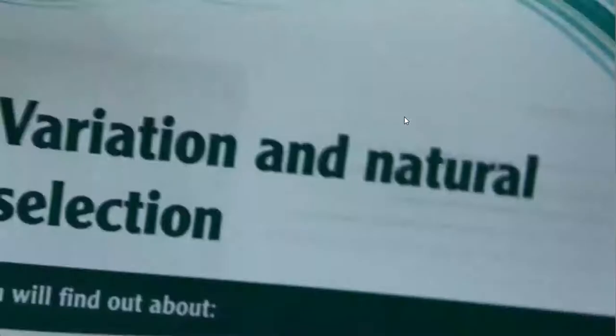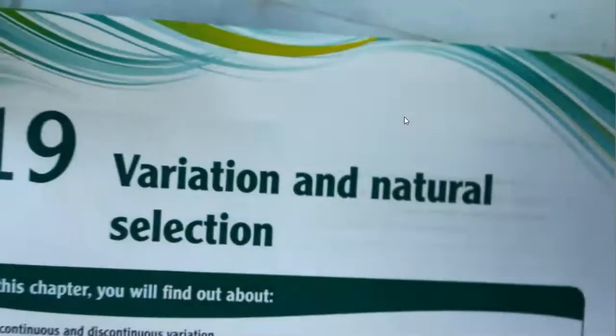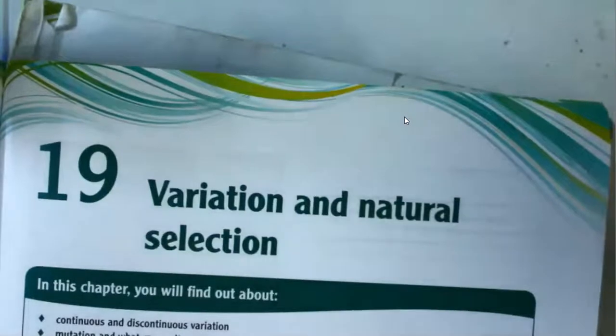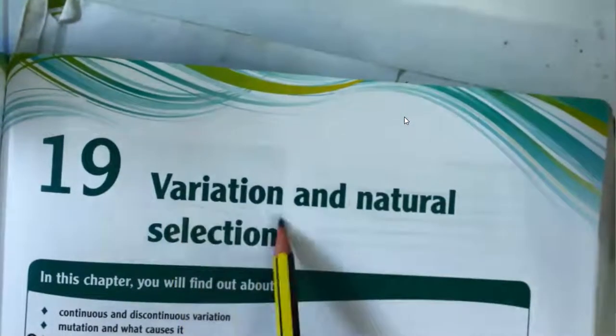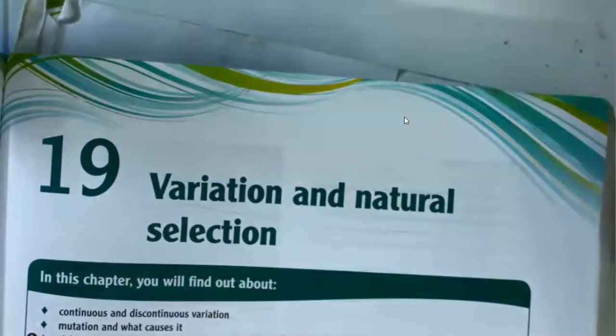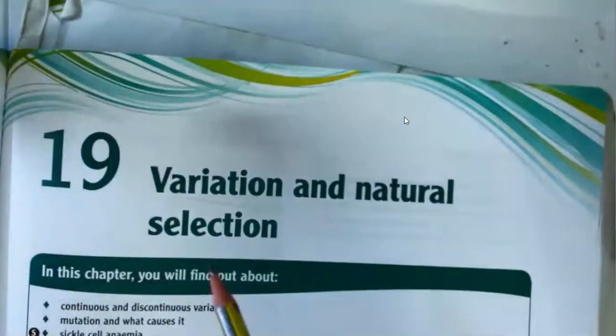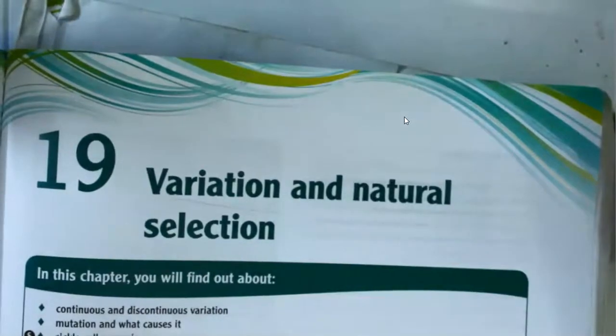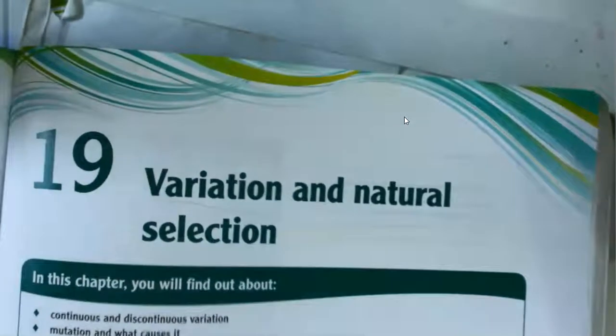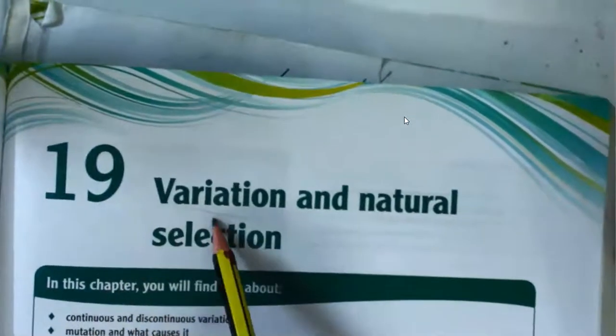Bismillahirrahmanirrahim. The title of our chapter is Natural Selection and Variation. When you start any chapter, make sure you know the meaning of the title and understand what you are studying. So what do you understand by variation? Let's start with variation first.